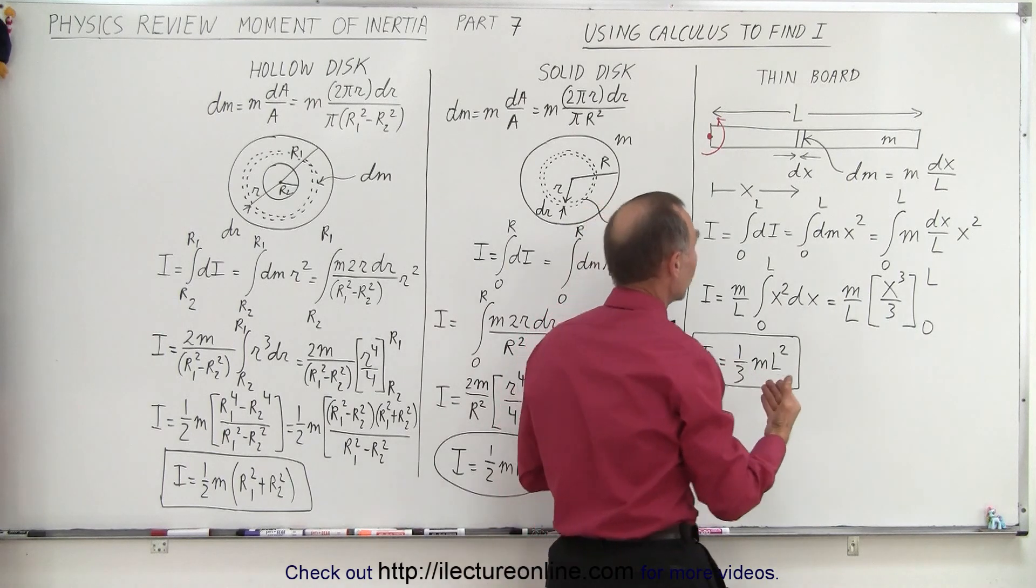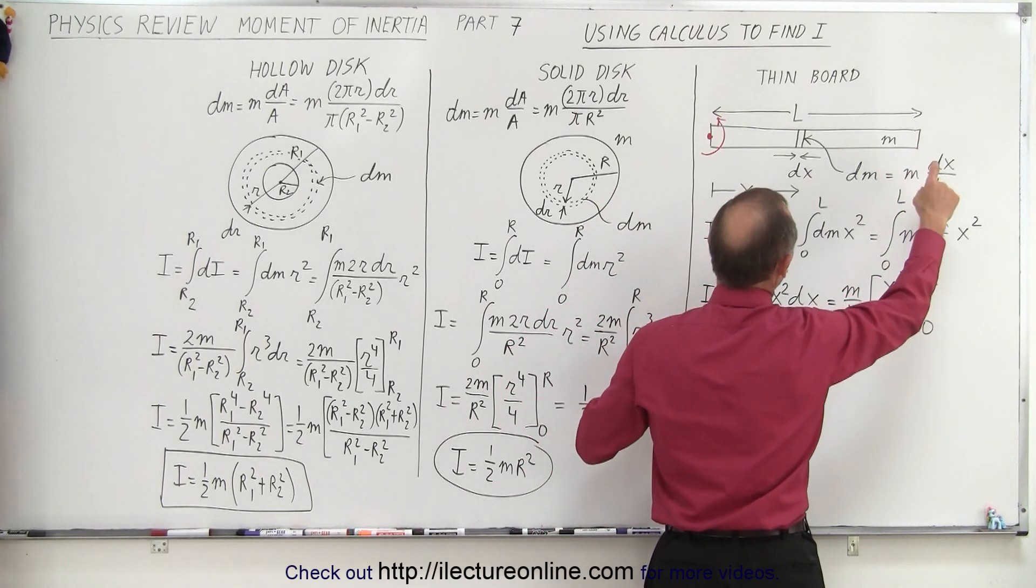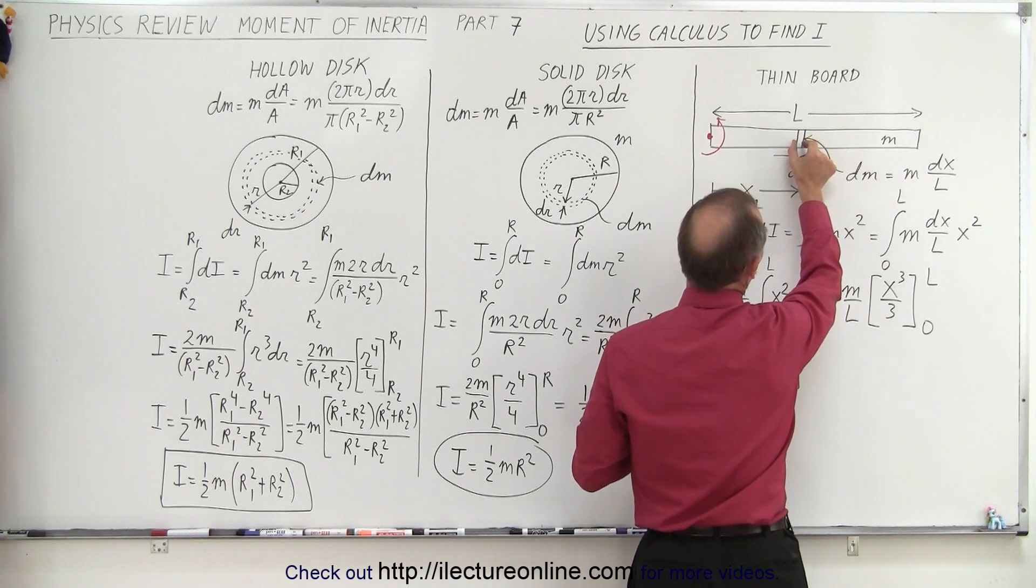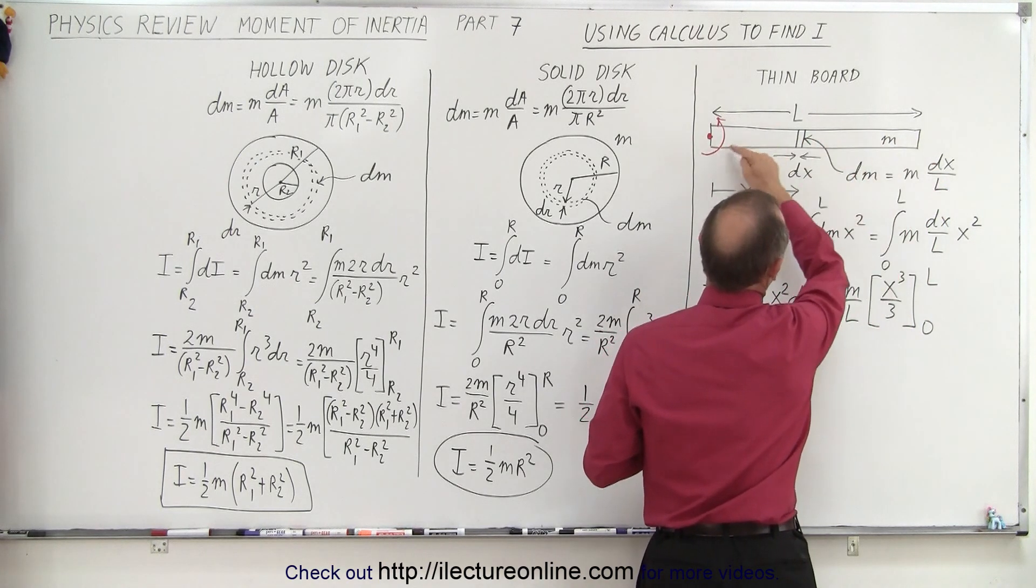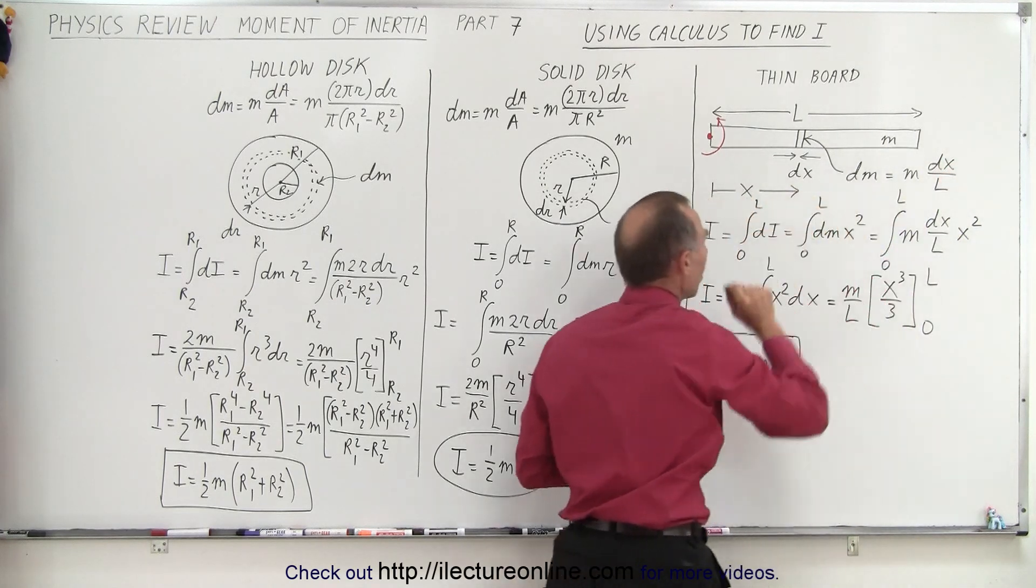Well, dm is going to be the ratio of, we're going to take the total mass and then multiply that times the ratio of the length of this small little segment relative to the whole length of the board, so it's dx over l. And so that will then give us the small dm.